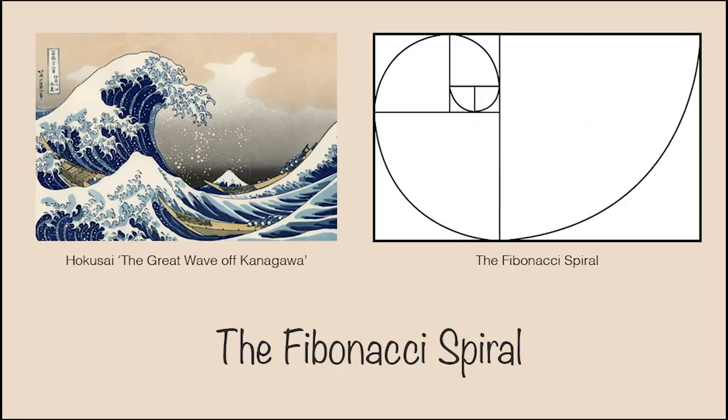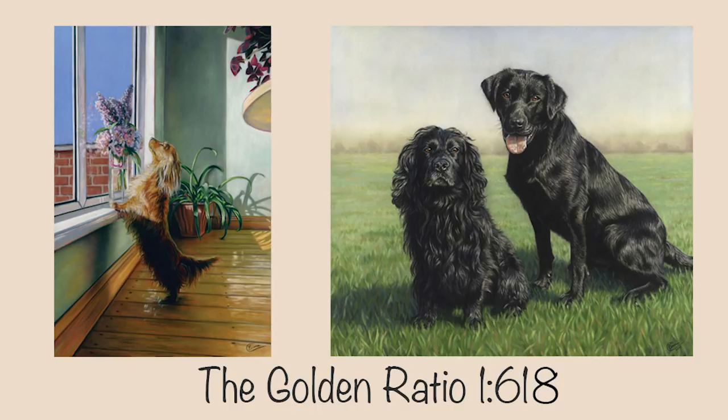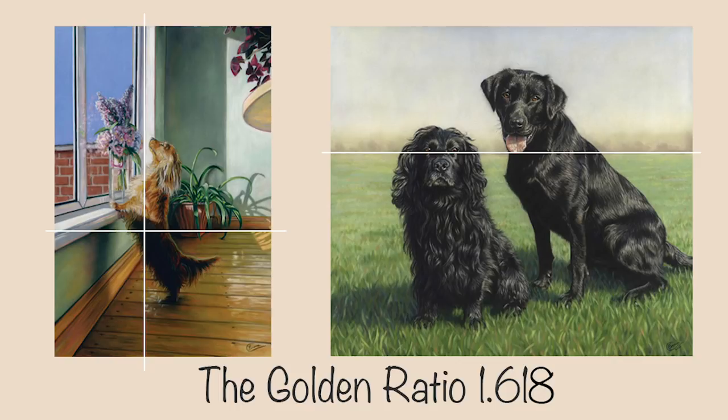But the Fibonacci sequence also gives us the golden ratio, and this I use often. The ratio is approximately 1.618 — that's the magic number. So if my painting is 10 inches tall and I want to find the sweet spot to place a horizon, I calculate 10 divided by 1.618 and that gives me 6.18 inches. So my measurement to make the horizon is around 6.18 inches.